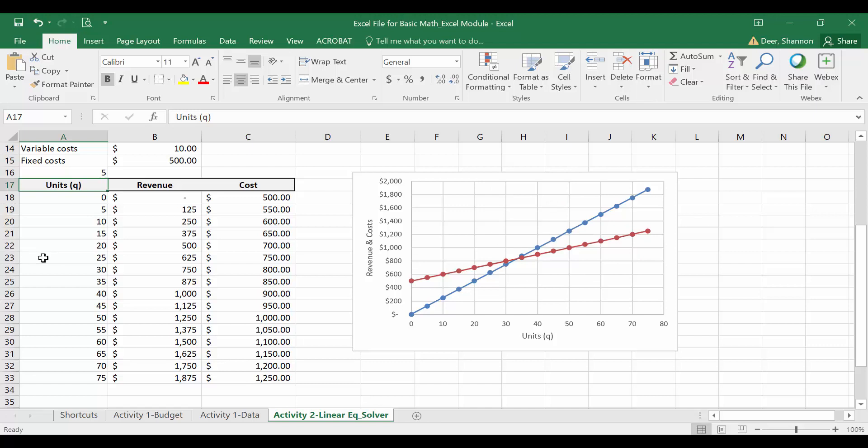If you remember from our manual calculation, breakeven was 33.33 or 34 units. So that falls right here in between 30 and 35 units. I just increased by five because that got our numbers a little bit higher so we could actually see that breakeven point. Before we were only going up to 15 units and now we're going up to 75 so we can actually see the 33 units here.